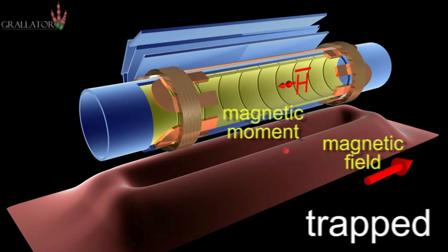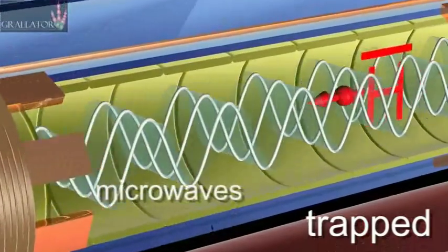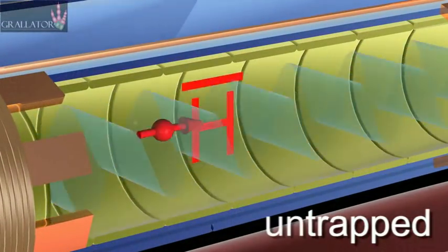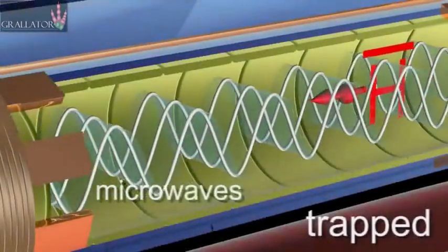Now here's the experiment we've just done. The antihydrogen is trapped because it's slightly magnetic, and that's indicated by the little arrow flying around with the atom. We shine microwaves on that little magnet and cause it to flip into the other direction. It'll happen more slowly here.